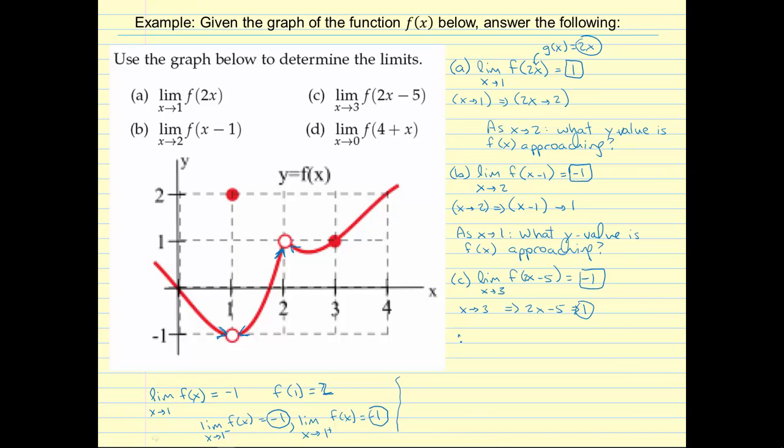The final one here is one of the questions that one of my students actually specifically asked about. I have the limit as x approaches 0, f of 4 plus x. And so as x approaches 0, I know 4 plus x approaches 4 plus 0, or 4. So I want to look for as x approaches 4 along the curve.